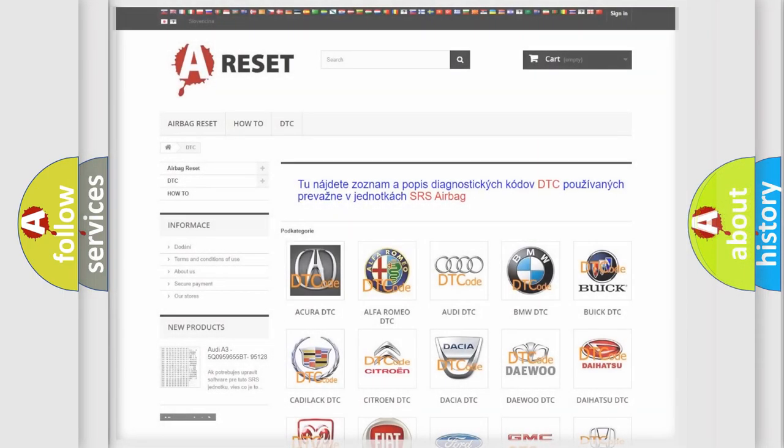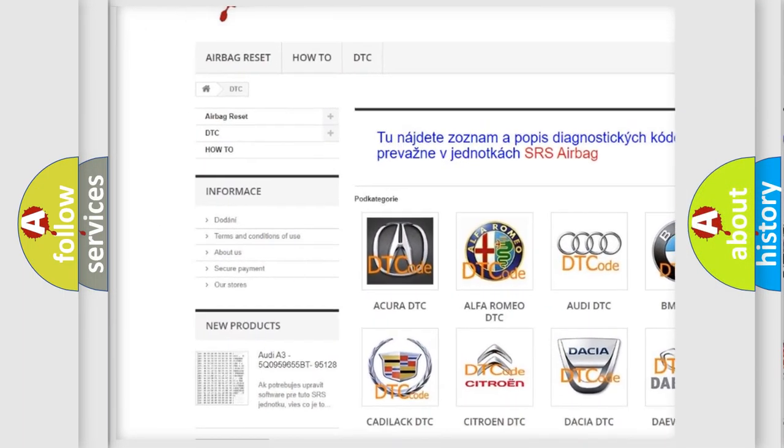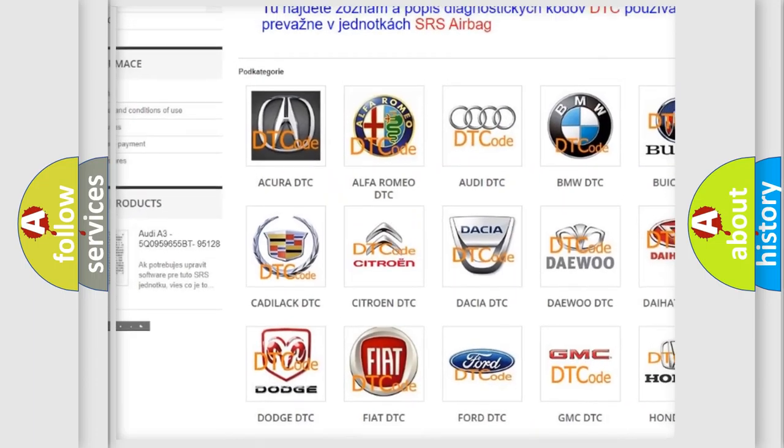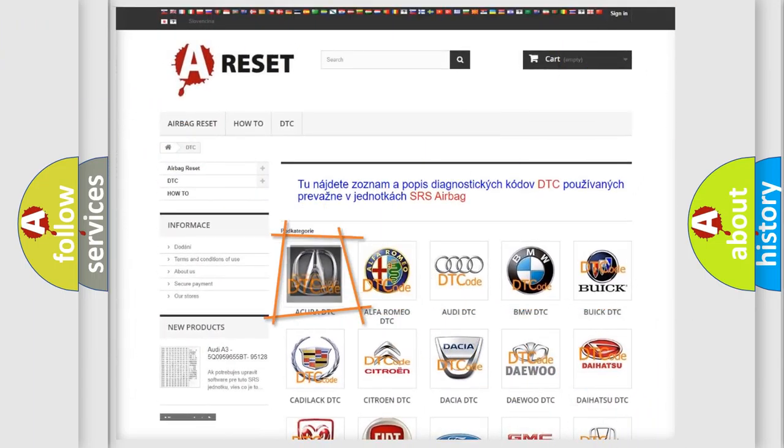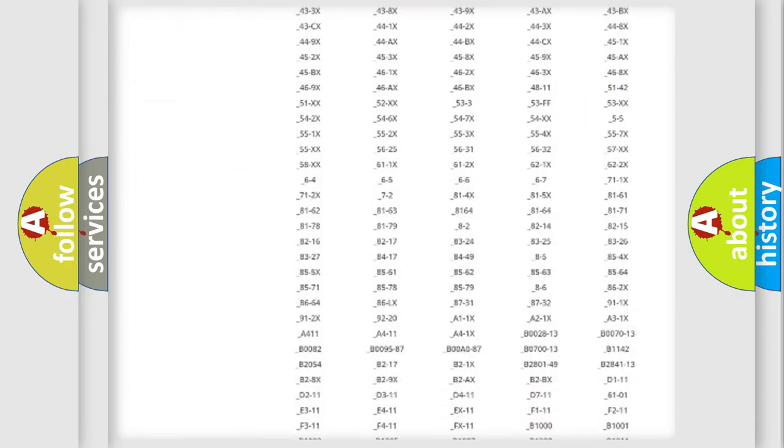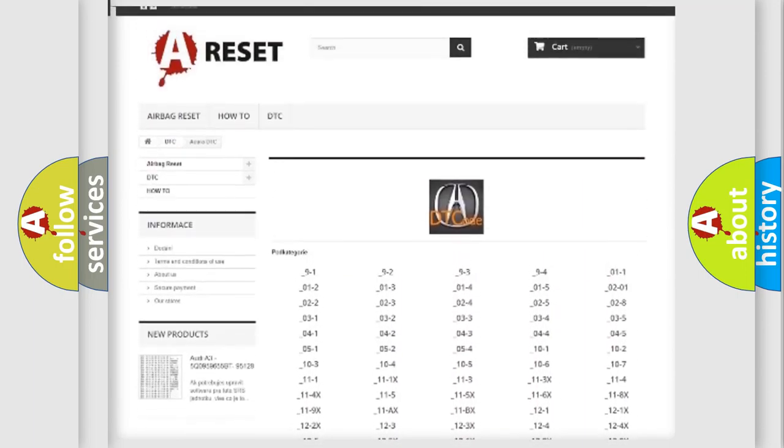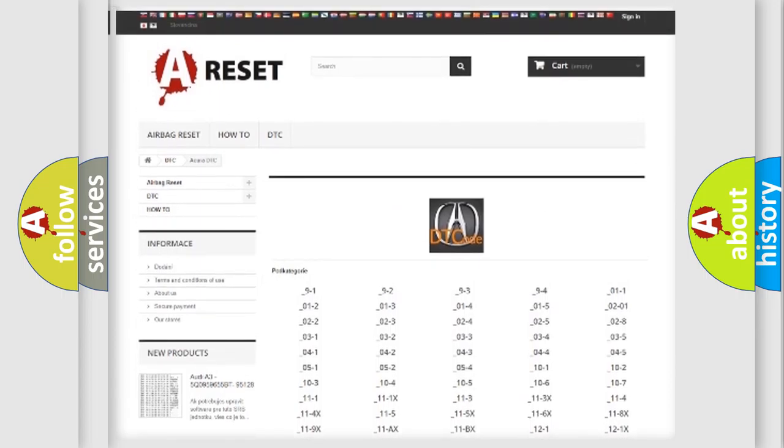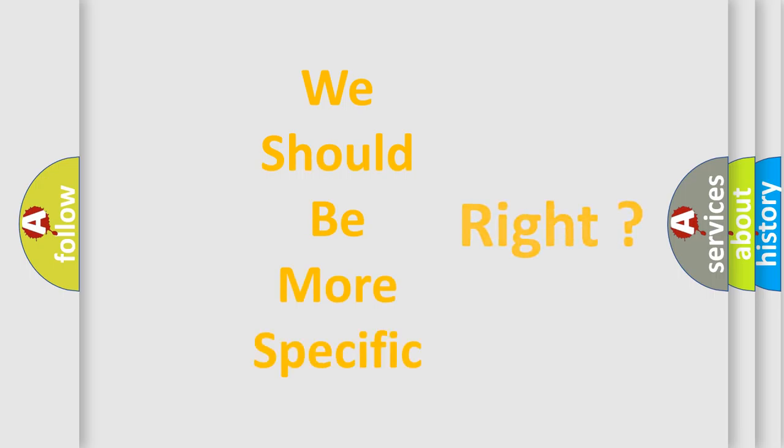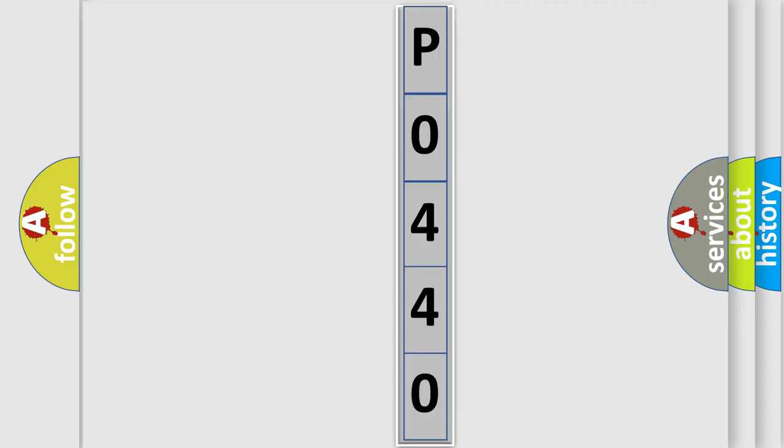Our website airbagreset.sk produces useful videos for you. You do not have to go through the OBD2 protocol anymore to know how to troubleshoot any car breakdown. You will find all the diagnostic codes that can be diagnosed in all vehicles, plus many other useful things. The following demonstration will help you look into the world of software for car control units.